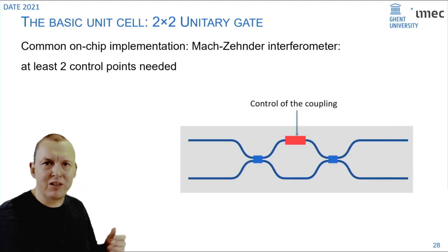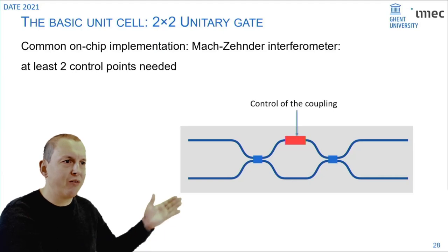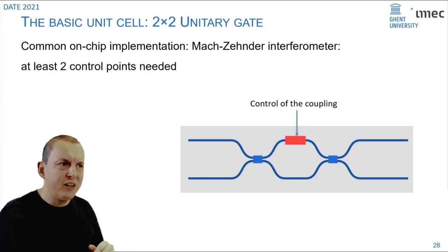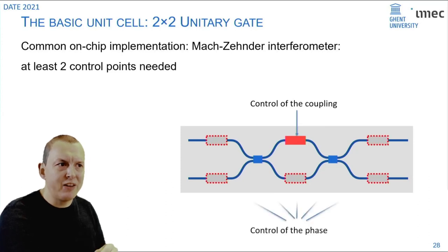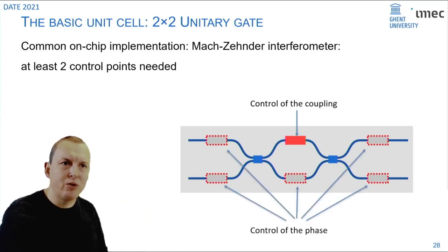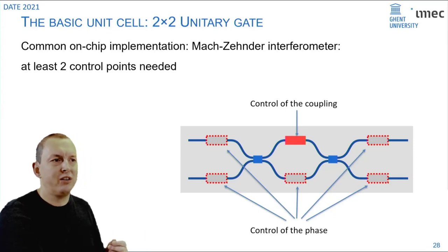Essentially what you need is a Mach-Zehnder interferometer where you have a 3dB beam splitter, a phase shifter, and a 3dB combiner. That gives you control of the coupling by just tuning that red phase shifter. If you now add an additional phase shifter in any of these positions, you can now control arbitrarily your phase relation between your two outputs.